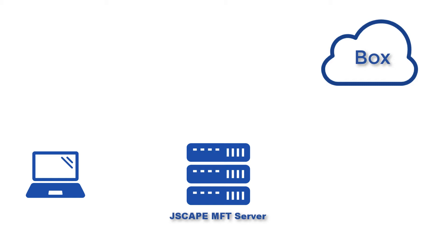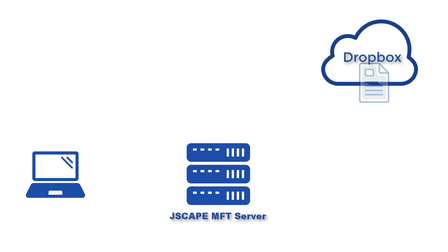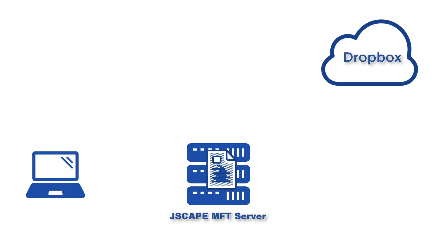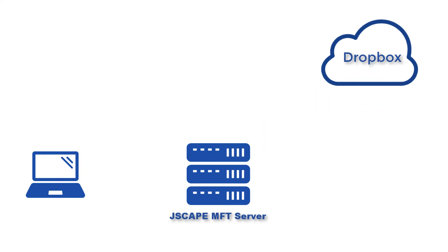But if you're more familiar with Dropbox and want to use it for this purpose, you can do that as well. In order to use Dropbox as a cloud storage solution for Jscape MFT Server, you'll need to create a network storage object for it — just like what you did with Box — and then map a virtual path to that network storage object.